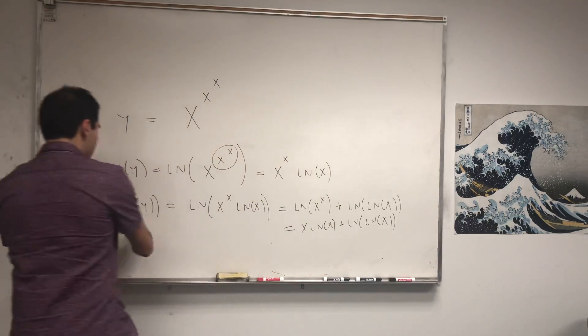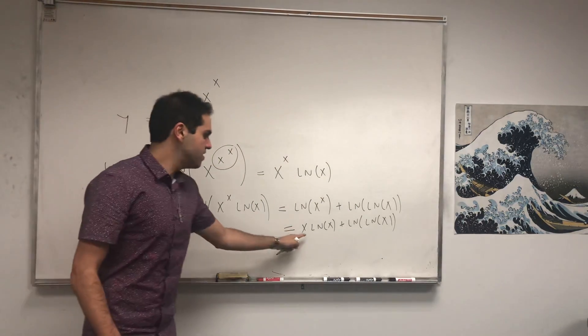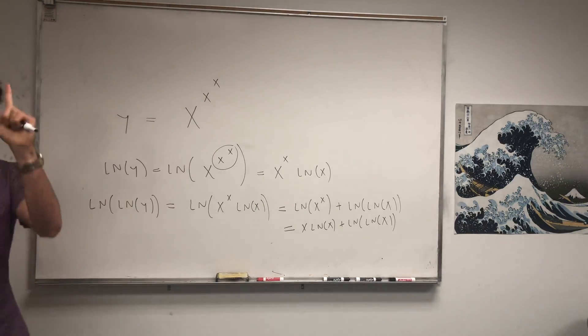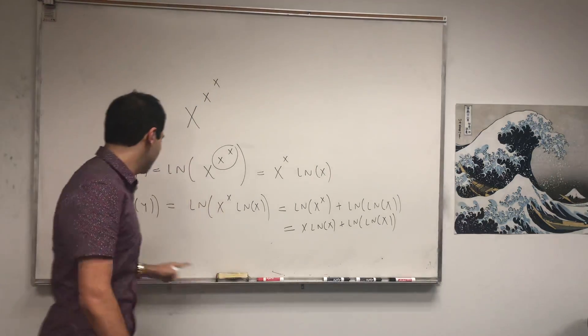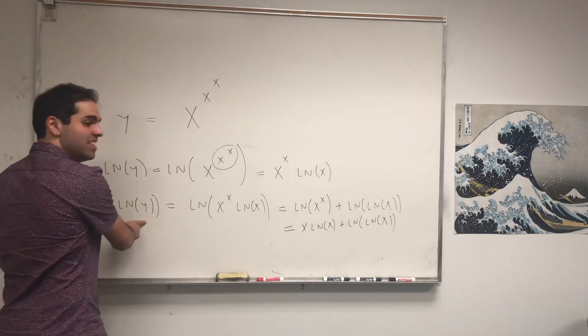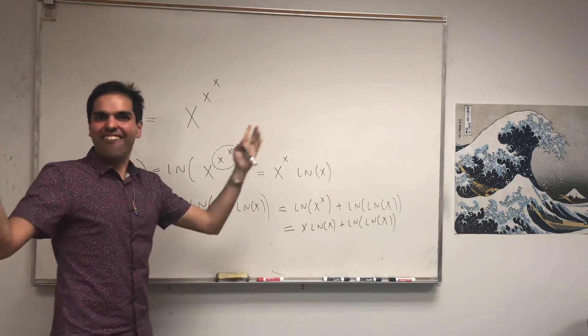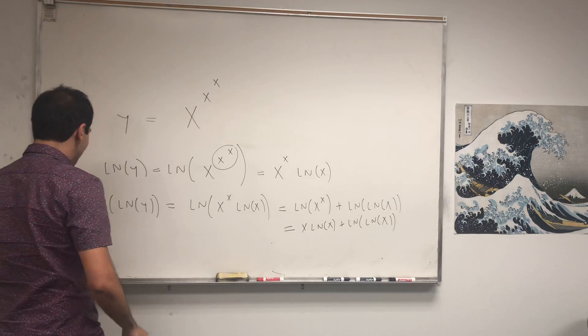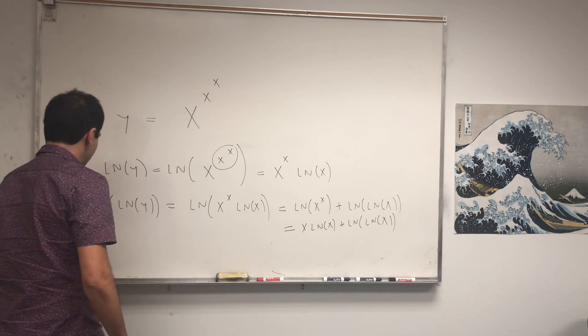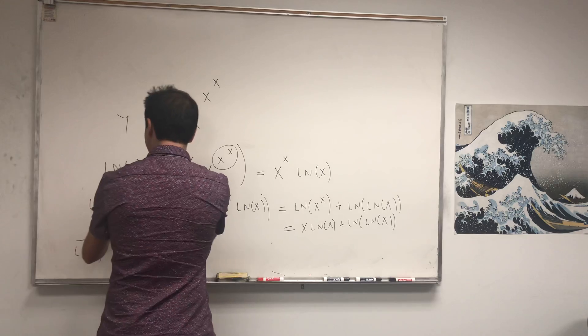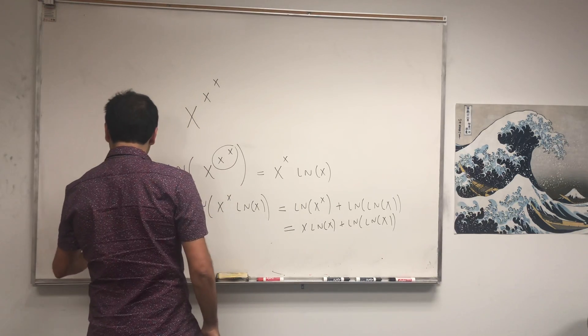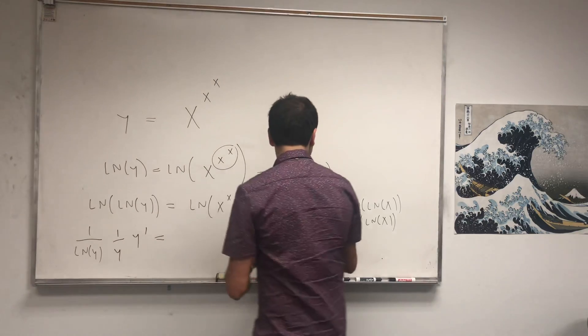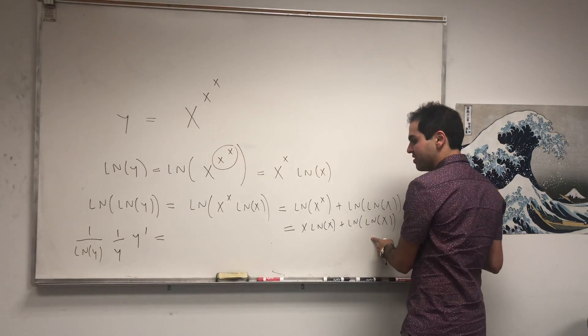All right, so what do we get? ln of ln of y, it's x ln of x plus ln of ln of x, and now it's differentiation time. So let's differentiate this side using the chain rule, and we get the derivative of this is 1 over ln of y times the derivative of the inside, which is 1 over y times y prime equals to the derivative of the right-hand side,